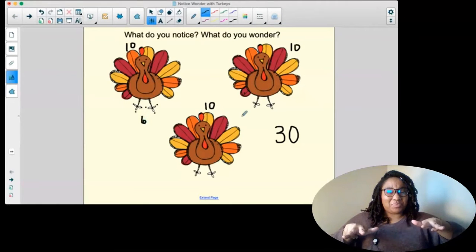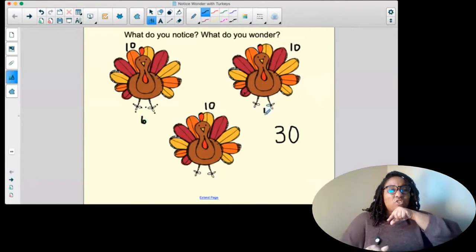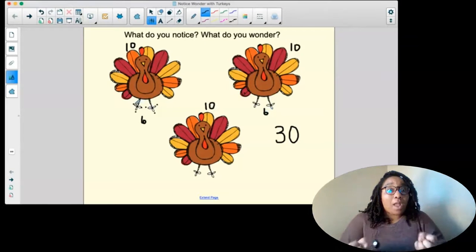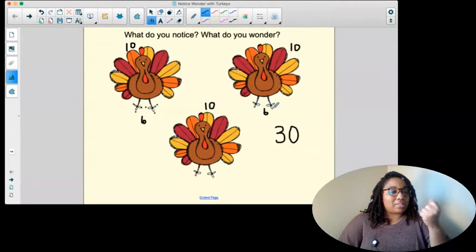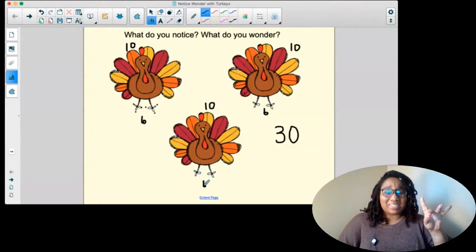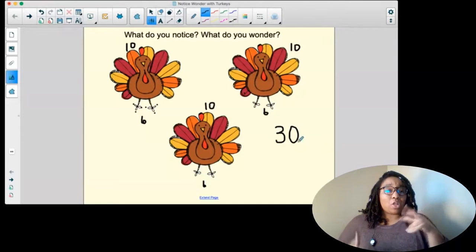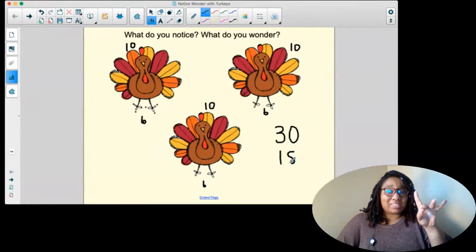So how many toes are there all together? Let's see. One, two, three, four, five, six, seven, eight, nine, ten, eleven, twelve, thirteen, fourteen, fifteen, sixteen, seventeen, eighteen. So we had thirty feathers and we had eighteen little turkey toes.